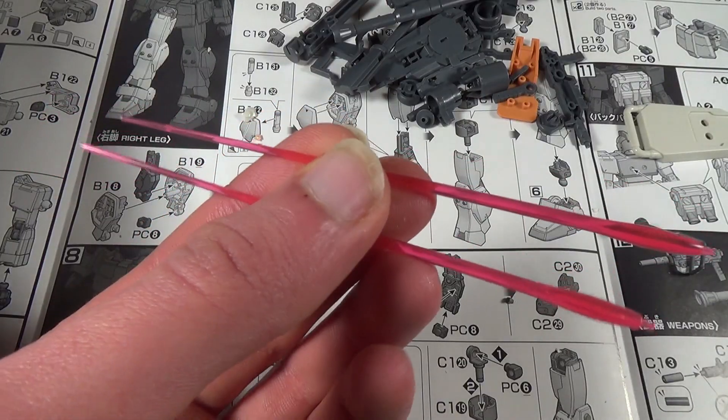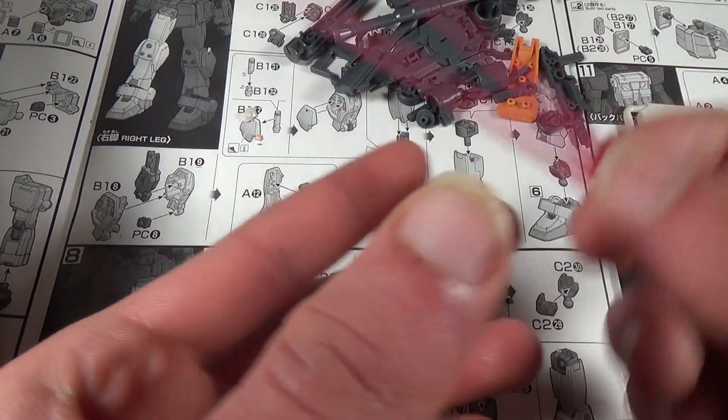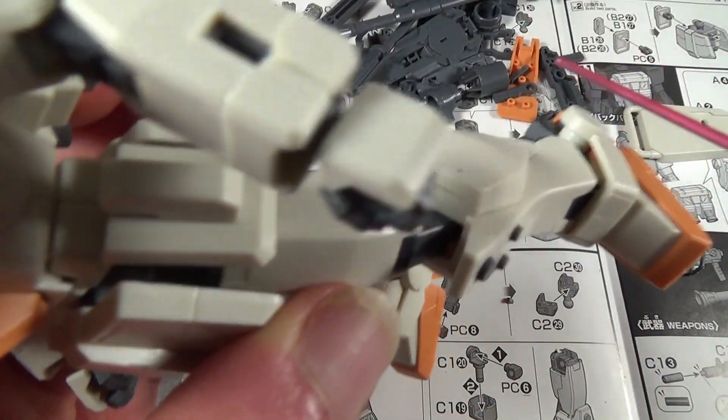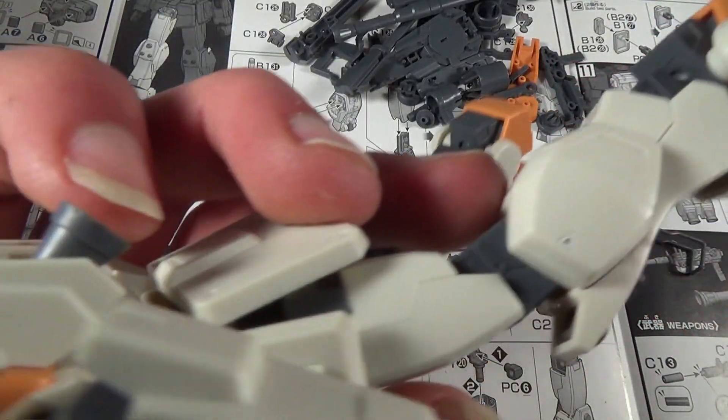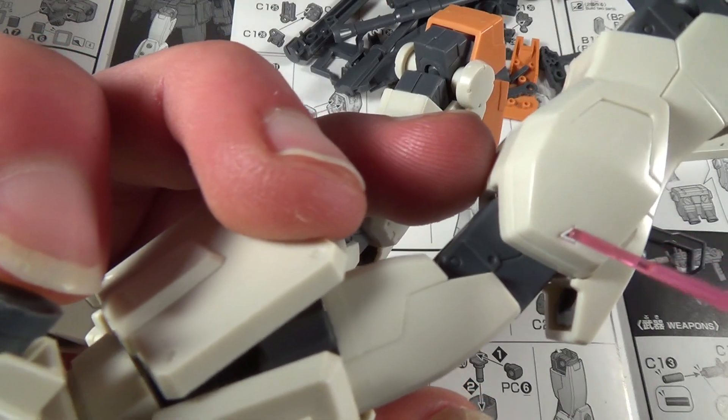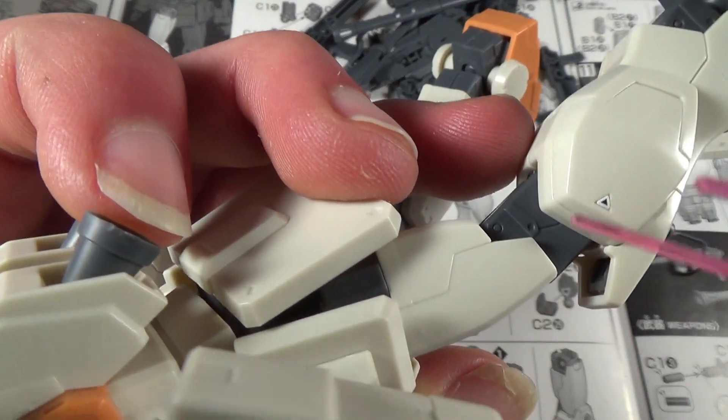So normally if I'm building the weapons I would start with the beam sabers, but we already built them, and they are hiding out in this guy's legs right here. And by the way, there are a couple little yellow triangular stickers, or actually these aren't even yellow, they're white actually. But little triangular stickers you're supposed to put on there. I forgot to put them on earlier, so I stuck them on right now.